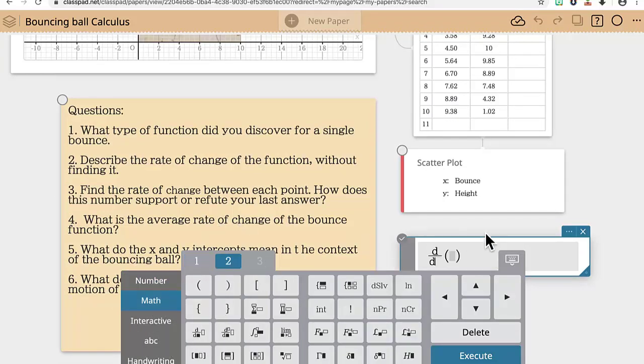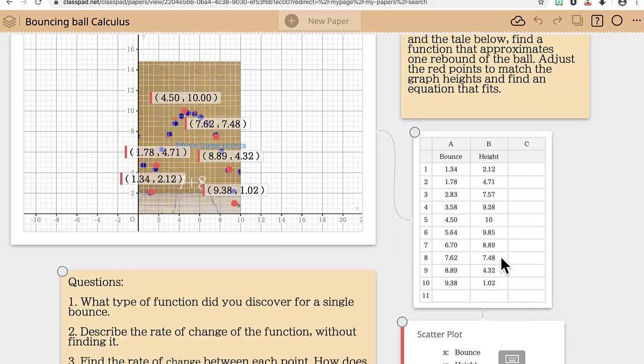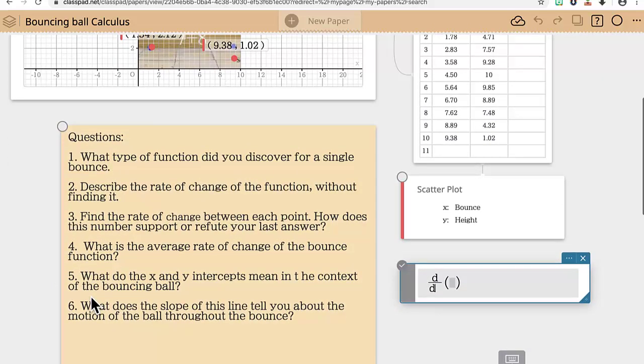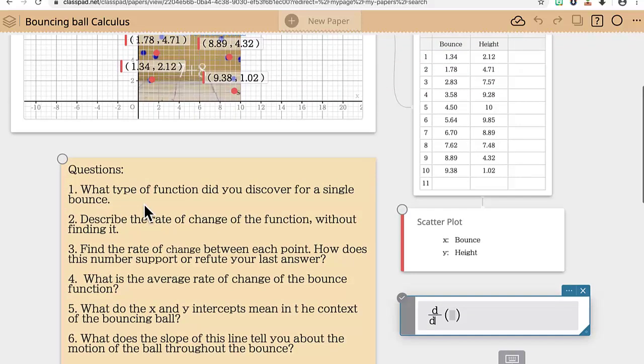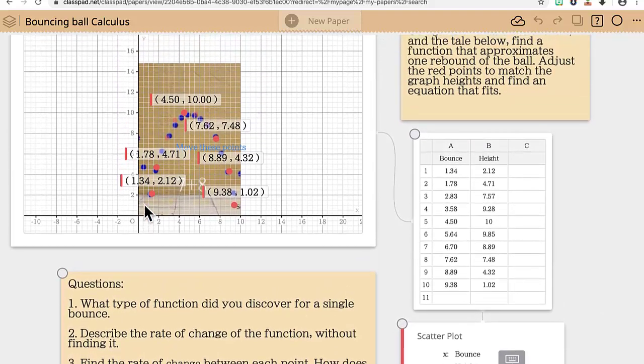You create a derivative function after you've created f of x based on the information from the parabola, and then get students to recognize that there is a connection between the rate of change of the ball as it goes through space and time and how that relates to the linear motion of the derivative and how those two are connected.